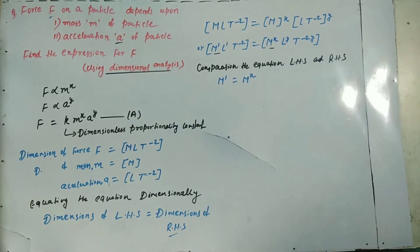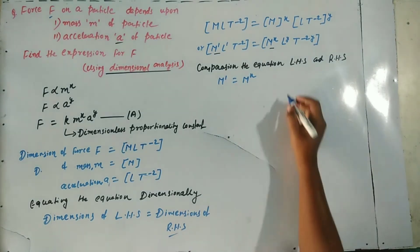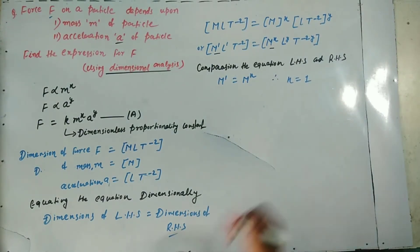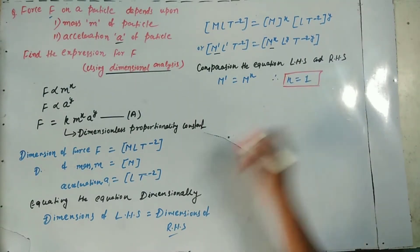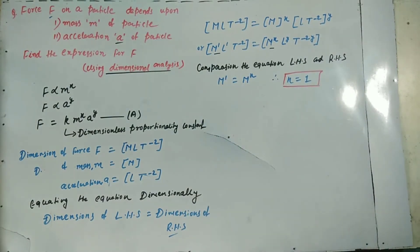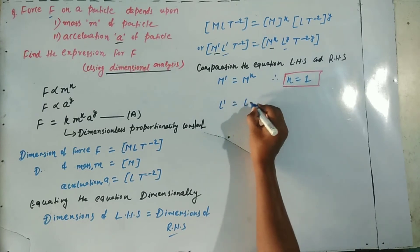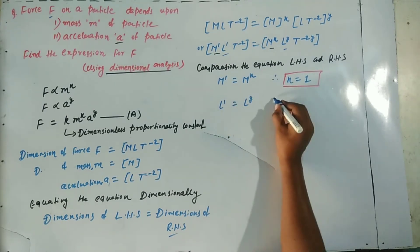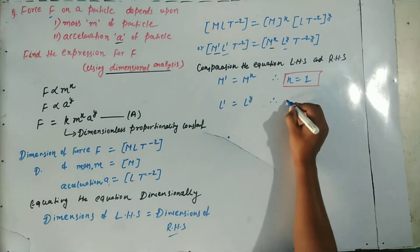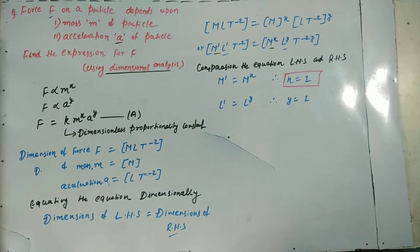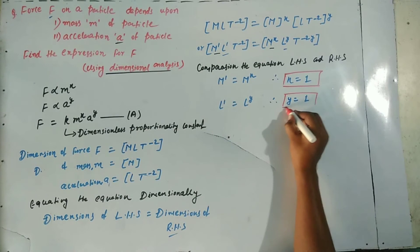From M to the power 1 equals M to the power X, the value of X is 1. Comparing the L terms: L to the power 1 equals L to the power Y, so the value of Y is also 1.